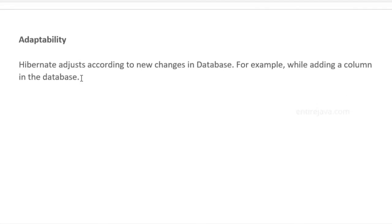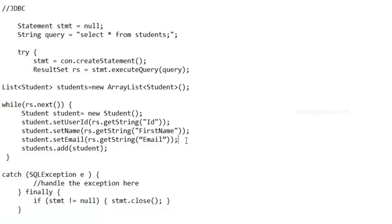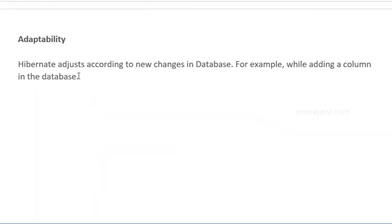One of the greatest strengths of Hibernate is its ability to adapt to new changes introduced in the database. For example, with JDBC, if you add a new column, you have to change the code in multiple places — adding statements both for reading and inserting that column. It is the developers who must take care of those changes. With Hibernate, it handles that burden for us automatically.